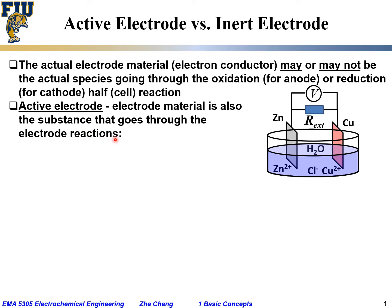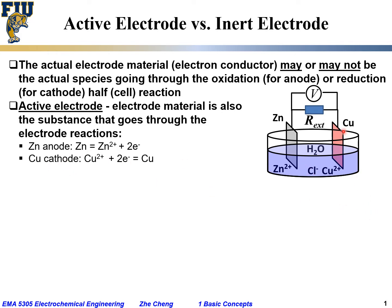Active electrode means the electrode material is also the species undergoing the electrode reactions — the oxidation or reduction half-cell reaction. For the zinc anode, remember that the anode is where oxidation occurs: the zinc metal gives out electrons to become zinc ions that dissolve into the solution. The electrons released travel through the external circuit into the copper cathode, where they combine with copper ions in solution to form copper metal atoms deposited on the copper electrode surface.